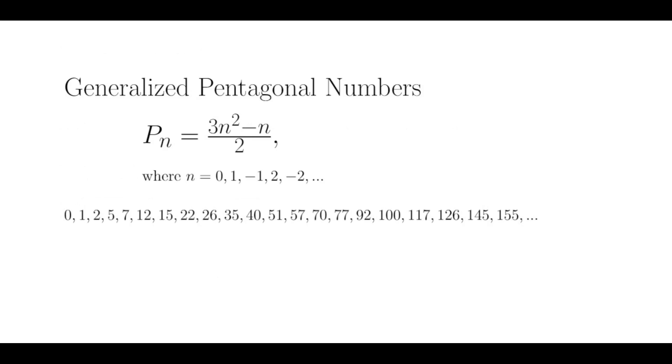Generalized pentagonal numbers are related to pentagonal numbers in the following way. To get the pentagonal numbers, we use the formula we've already showed, which is 3n squared minus n over 2, and plug in n for 1, 2, 3, etc.